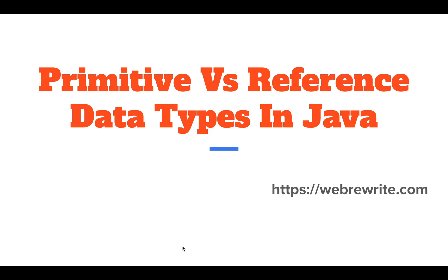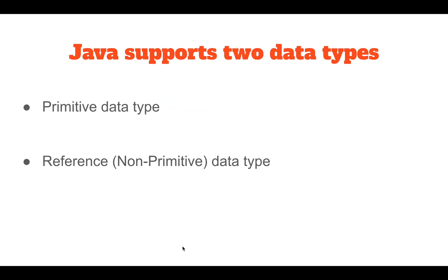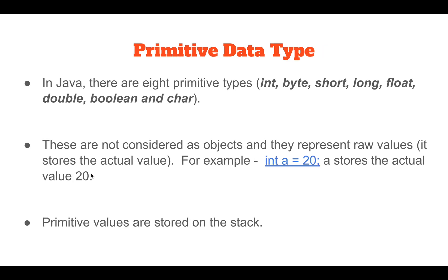Java basically supports two types of variables: one is primitive and the other is non-primitive or reference data type. A primitive data type is predefined by the programming language. In Java there are eight primitive types: byte, short, int, long, float, double, boolean, and char. These are not considered as objects and they store the actual value.